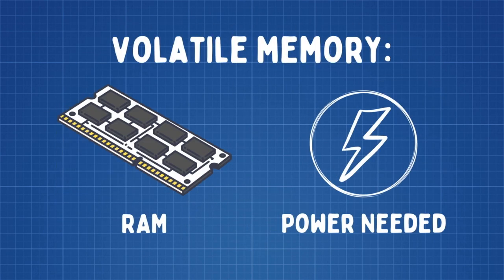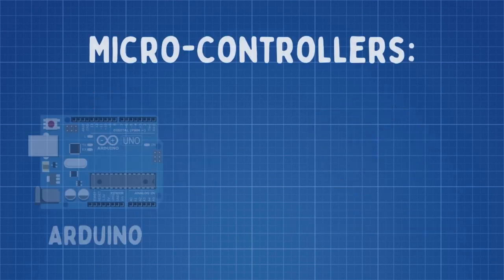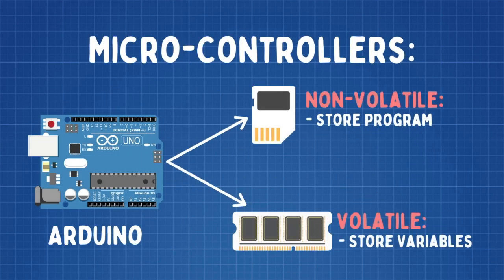On the other hand, volatile memory, also known as RAM, needs power to retain data. Microcontrollers such as the Arduino use non-volatile memory to store data permanently — for example, the actual program of the Arduino — and volatile memory to store temporary variables.